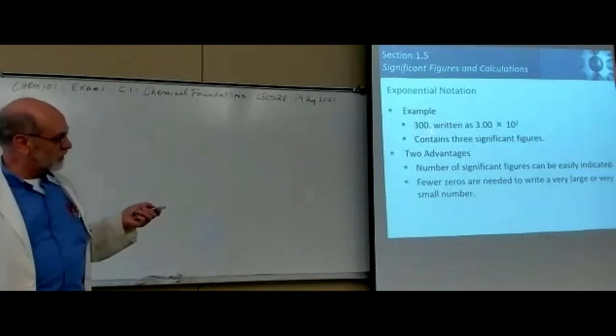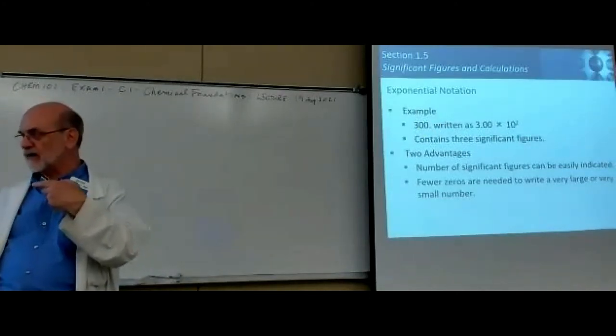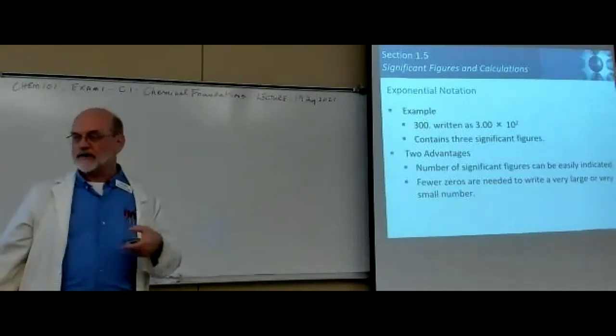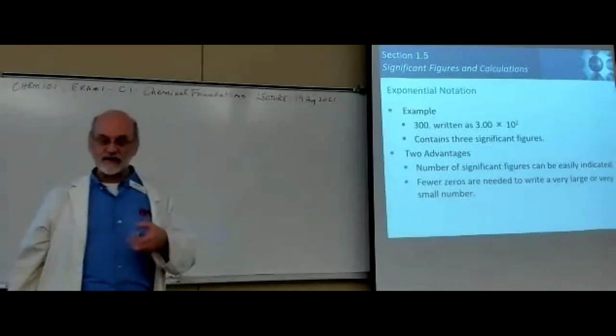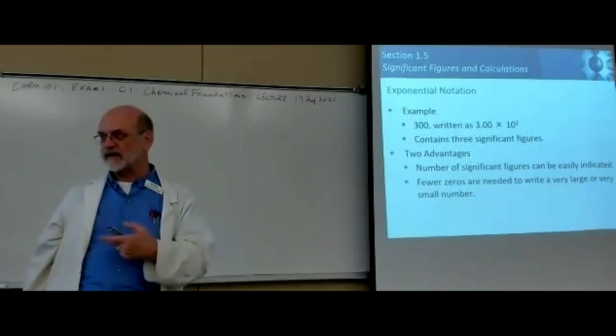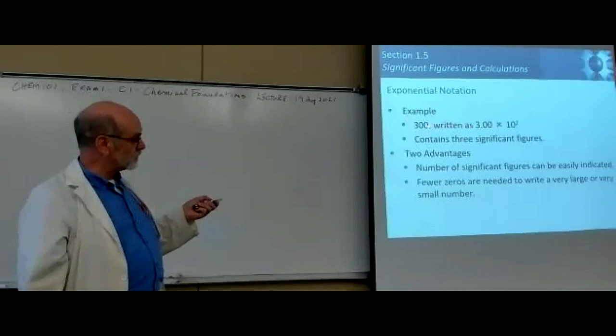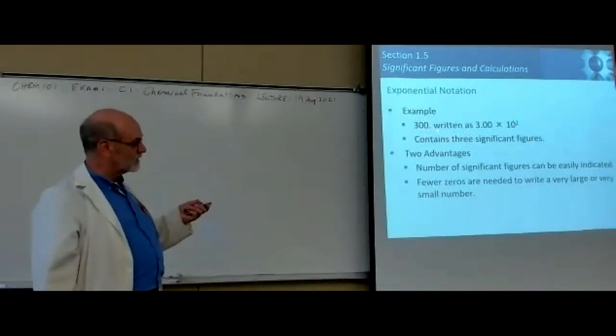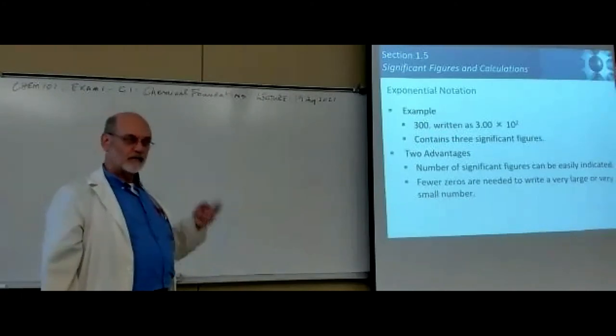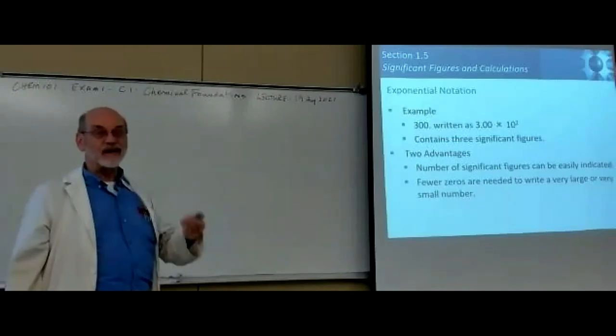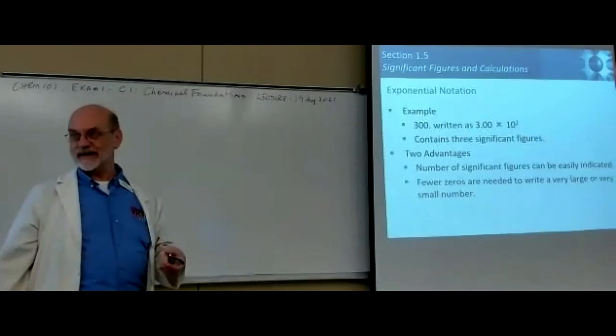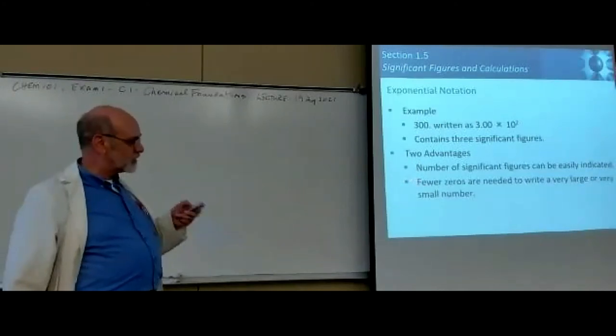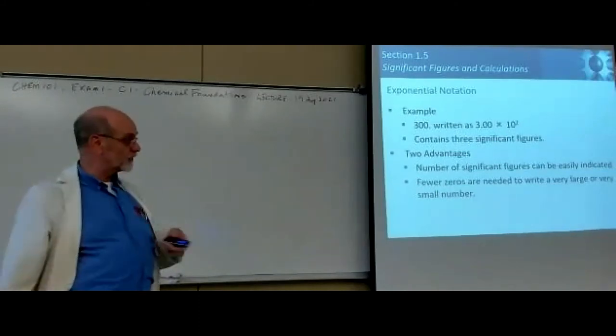If we move it to the left, we're making the coefficient smaller, so the power of 10 has to be bigger because the standard notation and the exponential notation must agree. But if you move to the right, say it's a fractional number 0.00345, move it to the right, you're making your coefficient bigger, so the power of 10 has to be smaller, which makes it negative. The main two advantages are it's more convenient notation for very large or very small numbers, and it's easier to determine what the significant figures are because you only have to look at the coefficient.